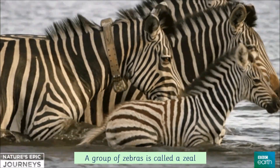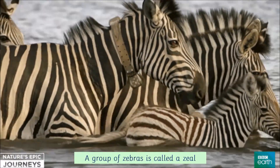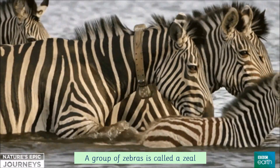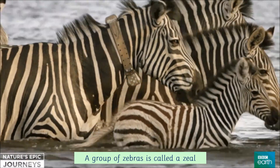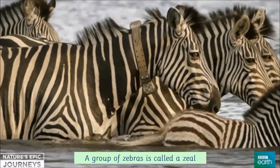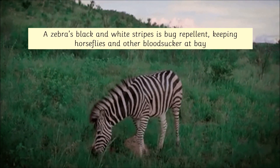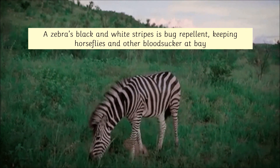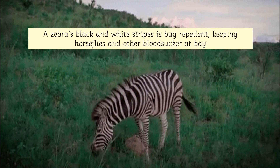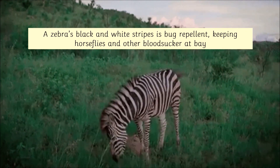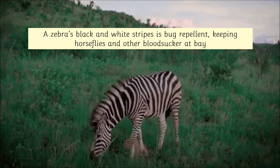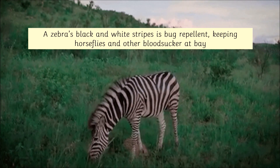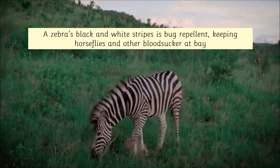A group of zebras is called a zeal. A zebra's black and white stripes act as bug repellent, keeping horseflies and other bloodsuckers at bay.